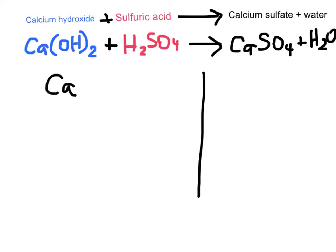Now, a key tip: keep the sulfate group together. Notice that here it is SO4 and over here it is also SO4 — it does not change, so you do not need to count the sulfur and oxygen separately. If you start breaking it up, it gets very confusing because there's oxygen here as well as inside the sulfate. Treat it like a family group that must stay together at all times — it makes life much easier.